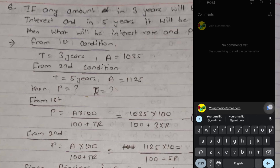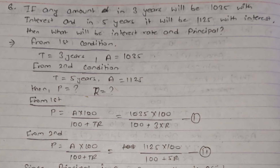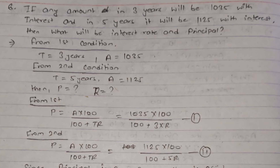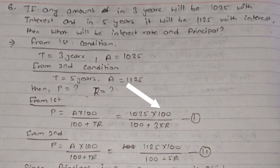Now let's start our first question. The question goes like this: if any amount in 3 years will be 1035 with interest, and in 5 years it will be 1125 with interest, then what will be the interest rate and principal? There are two given conditions. The first condition: time is 3 years, total amount is 1035. The second condition: time is 5 years, amount is 1125. We find the principal formula: P = Amount × 100 / (100 + Time × Rate). Substituting for condition one: P = 1035 × 100 / (100 + 3r) — this is equation 1.